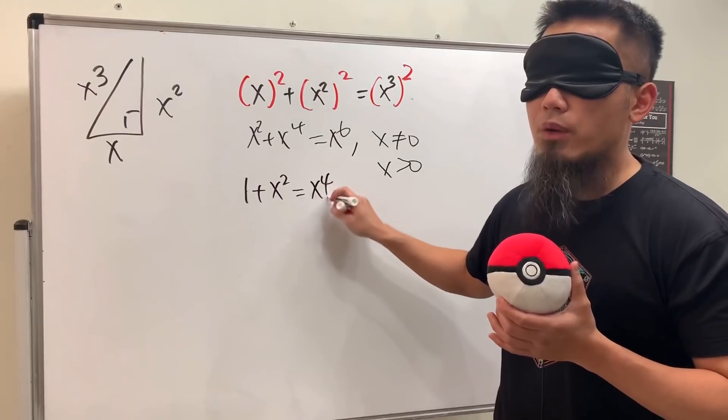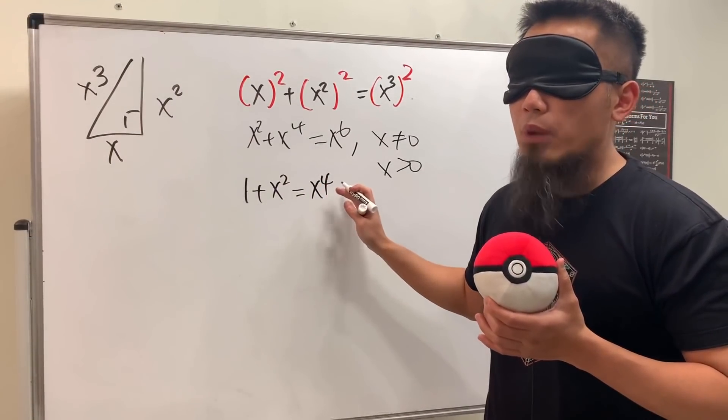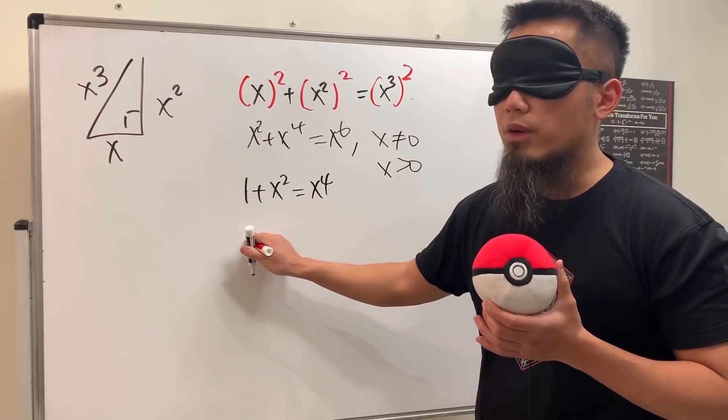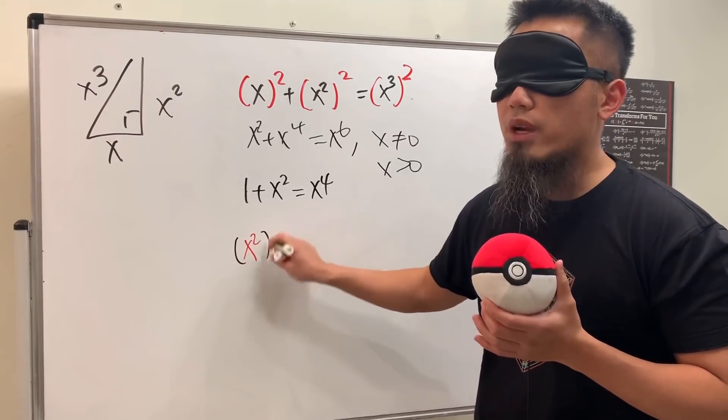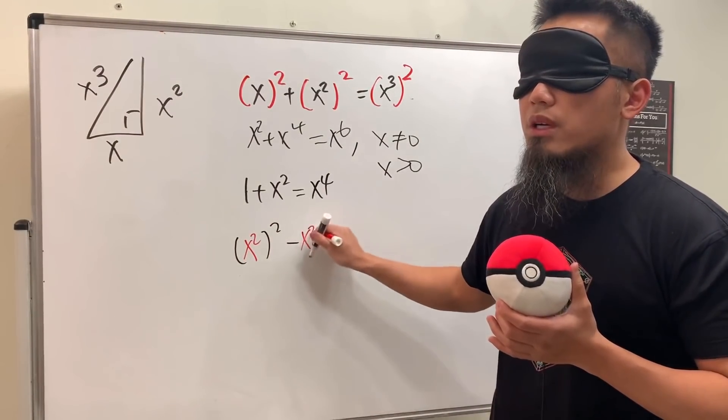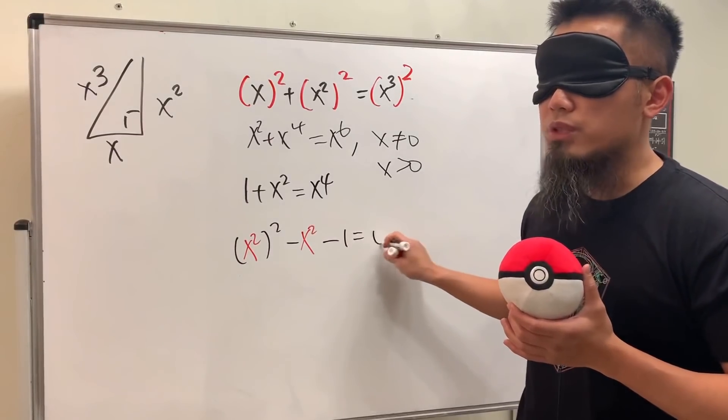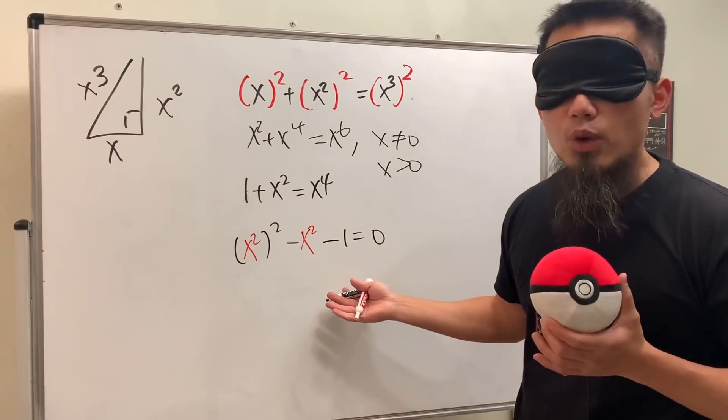Now clean things up. I will keep the x to the fourth power right, so I'll look at that as x squared and then squared. Move this to the other side, we have minus x squared and then minus 1 that's equal to 0. You see, this is the quadratic equation in terms of x squared, so we can just use the quadratic formula.